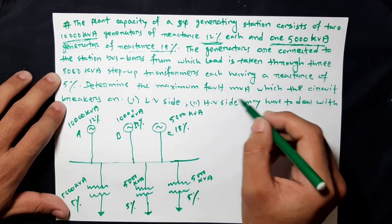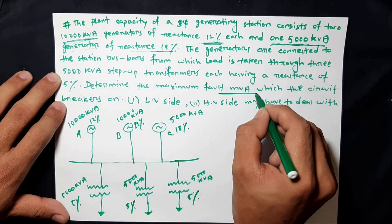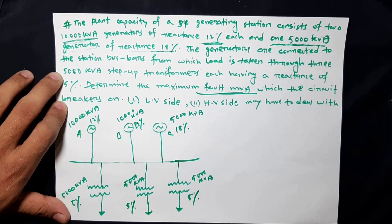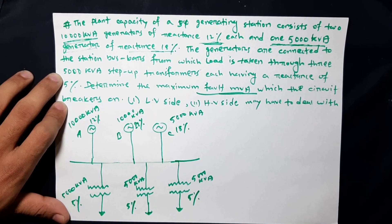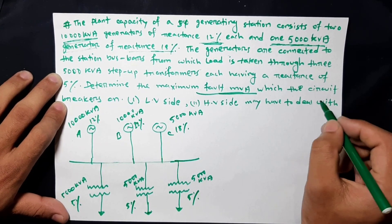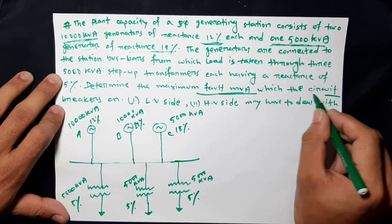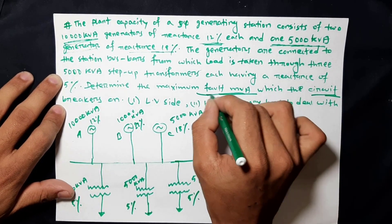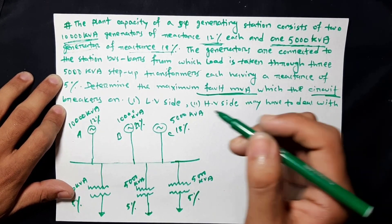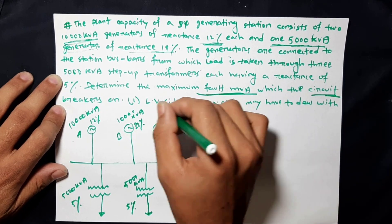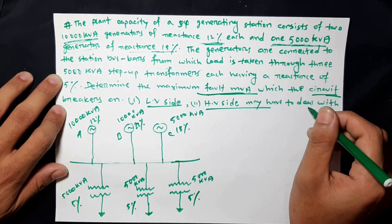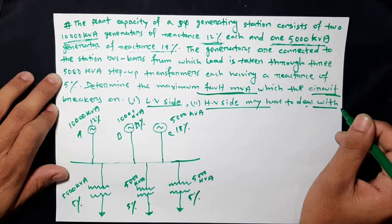Determine the maximum fault MVA — that means short circuit MVA — when the circuit breakers are on. I'm going to determine the short circuit MVA for the low voltage side and high voltage side.